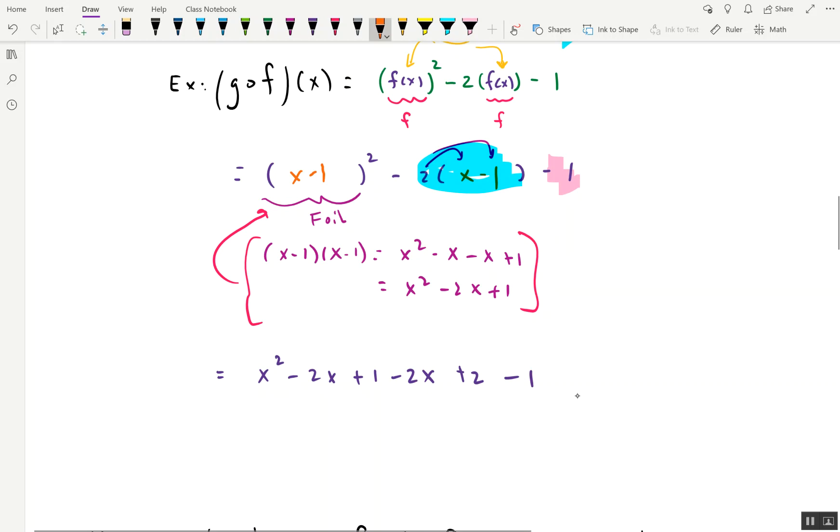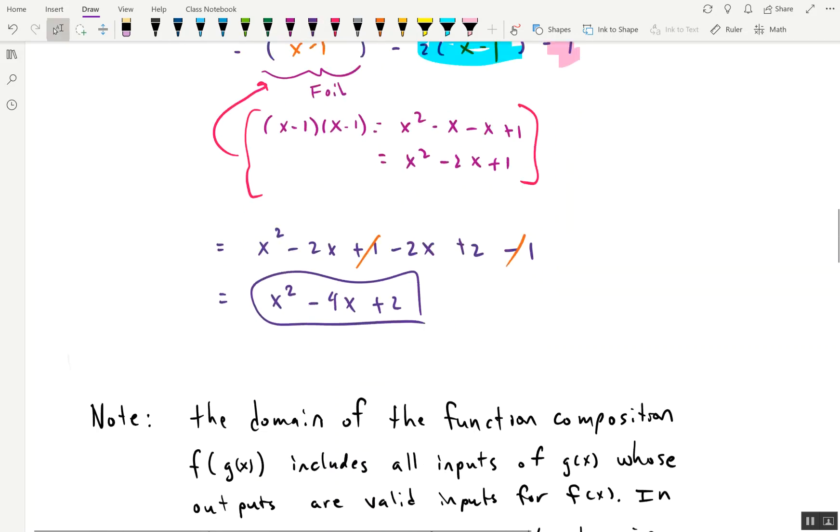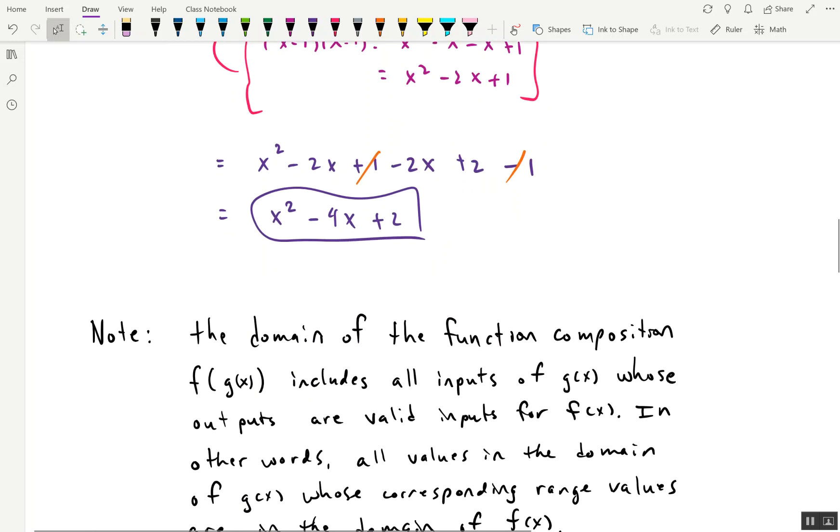If we do a little bit of simplification, then we can see the ones cancel. And that gives us what? x squared minus four x plus two. So that is g of f. We've finished g of f. We took f and put in g, and that's what we got. That's the new function called g of f. So now we've done f of g, g of f. How do we handle their domains?